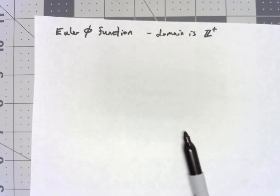I want to talk about a number theoretic function. It's called the Euler phi function, and first thing is that its domain is positive integers.